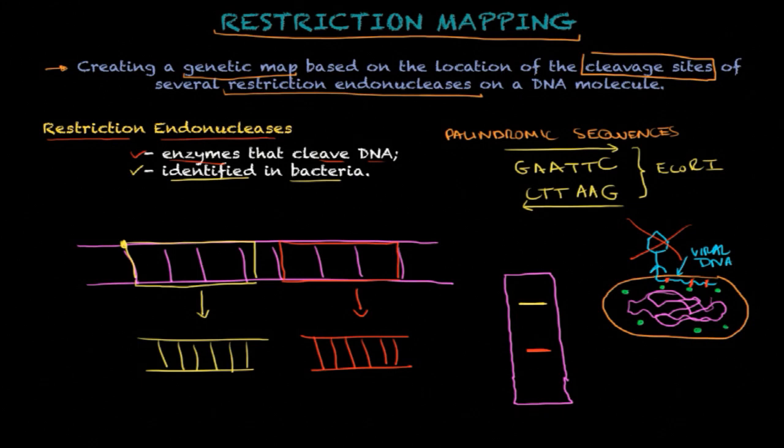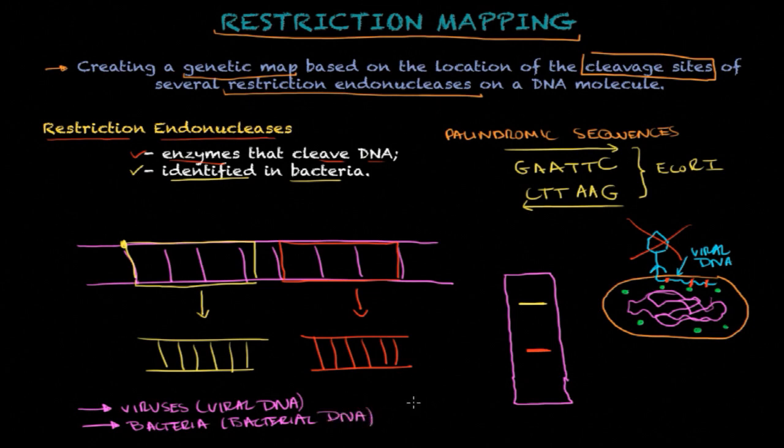Now one small point that I would like to make before we go into more detail on restriction mapping is that this is a technique that is used when you want to study viral DNA or bacteria. It's very useful because you can create a specific map of viral DNA and identify a specific type of virus, or study bacterial DNA.